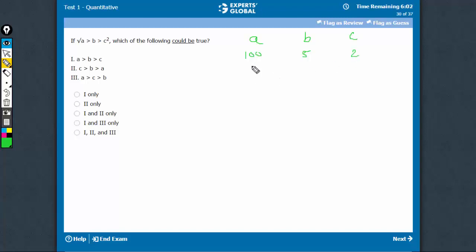Okay. So, square root 100 is 10, b is 5, and c squared is 4. So, this holds.